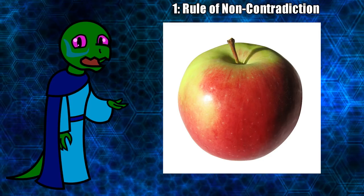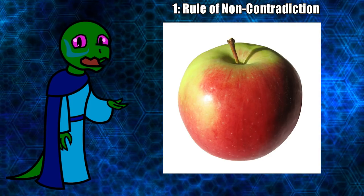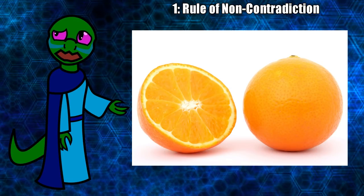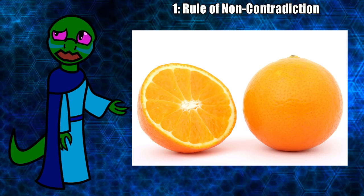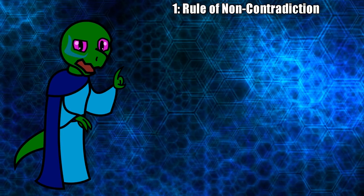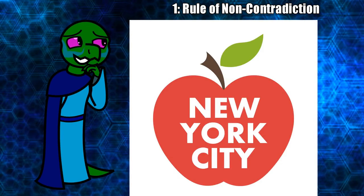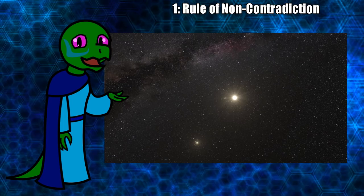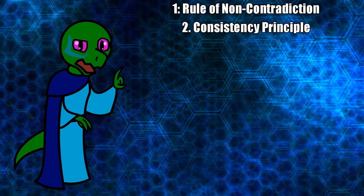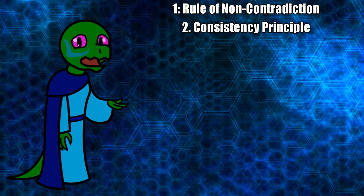An apple cannot also not be an apple. An apple cannot also be an orange, as what makes something an apple is mutually exclusive with what makes it an orange. Now this is always true. This apple will continue to not be an orange, regardless of whether it is in New York City, Tokyo, or in orbit around Alpha Centauri. What I just described is called the consistency principle.